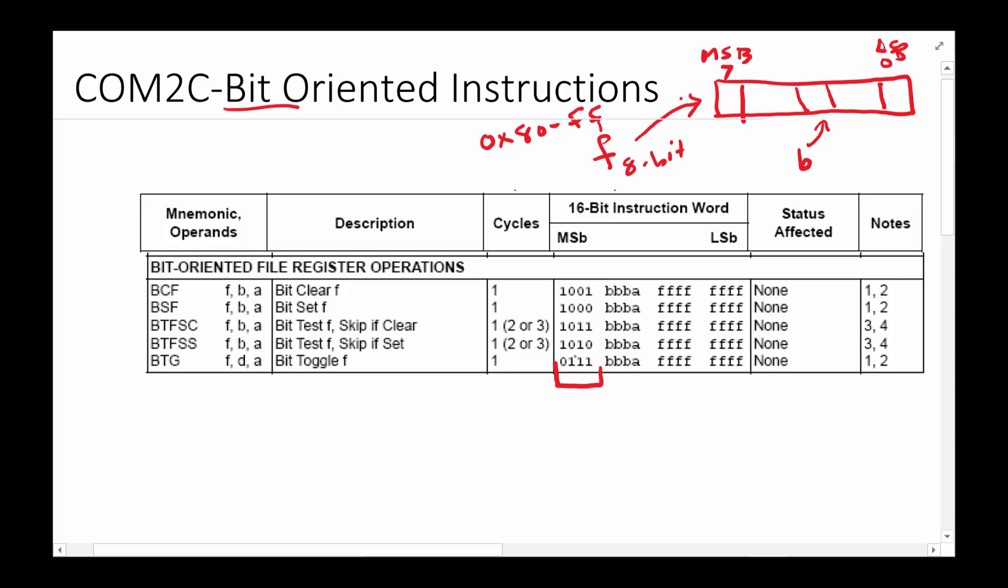For example, if you see here 0111, you know that is a bit toggle. Or if you see 1001, you know it's a bit clear. This we call opcode. And then these three B's are which bit within a byte you want to work on. Since it can be 0 through 7, we need at least three bits to specify.